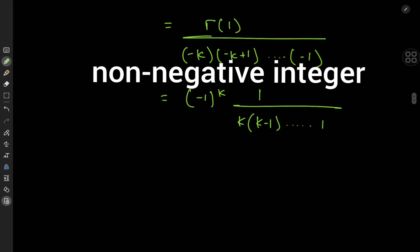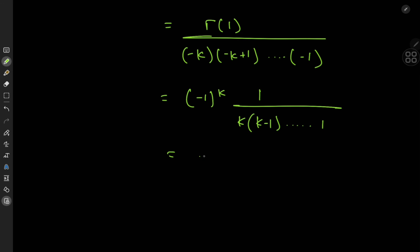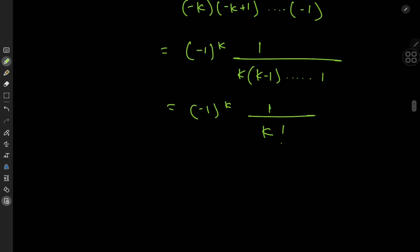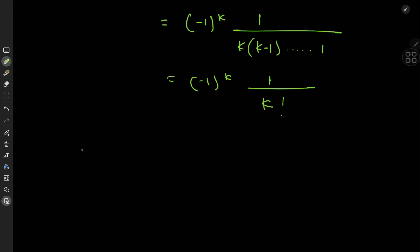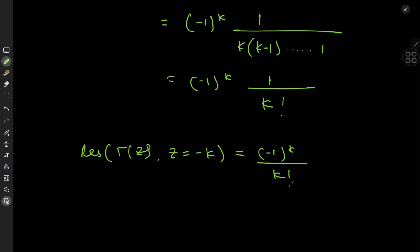Since k is just a positive integer, k·(k−1)···1 is simply k factorial. So we conclude: the residue of the gamma function at z = −k, where k ≥ 0, is (−1)^k / k!.